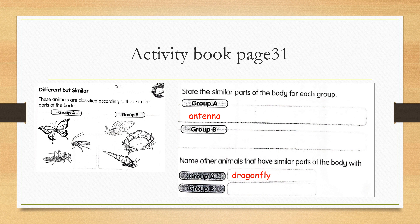So for Group A, the butterfly, cockroach and grasshopper. All these animals have antenna. So you do for Group B.